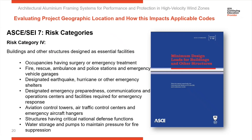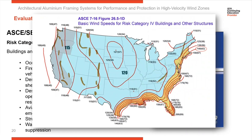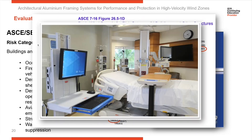The top category is Risk Category 4. These are facilities that, if lost, would have a major negative impact upon the community. They provide a critically needed service or function that, if lost, could not be replaced quickly, leaving the community without a critically needed service. Looking at the map now, the 140 mile-per-hour wind band has moved way inward, taking in a lot more territory. We're talking about medical facilities, hospitals, fire departments, police departments — facilities that are critical to the community.